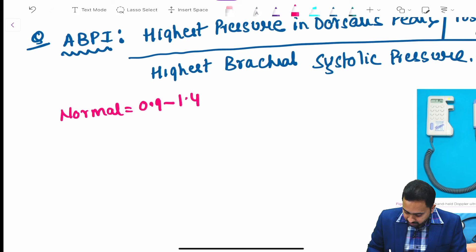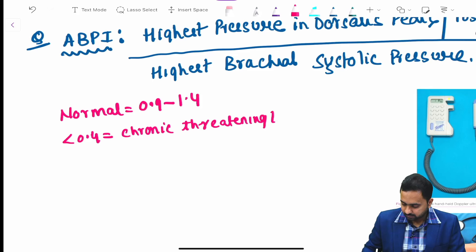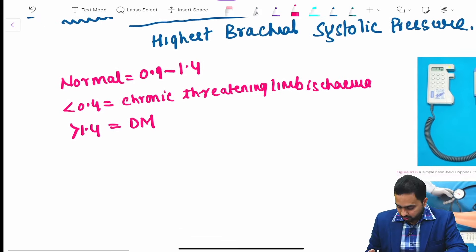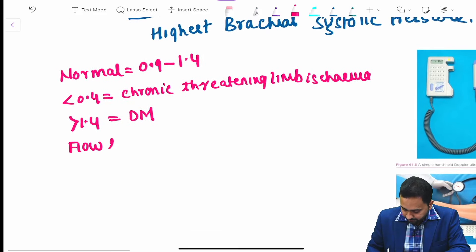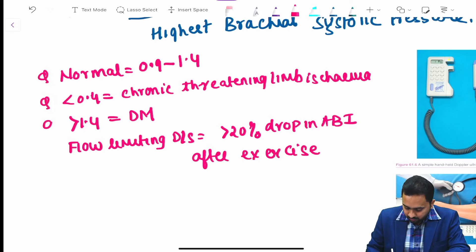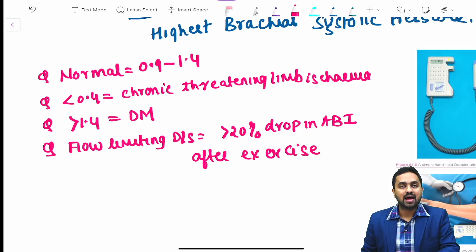What are the values of ABPI? The normal value is 0.9 to 1.4. If the value is less than 0.4, it is suggestive of chronic threatening limb ischemia. If the score is more than 1.4, it suggests diabetes mellitus due to calcification of vessel walls. A flow-limiting disease is suggested when there is more than 20% drop in ABPI after exercise.